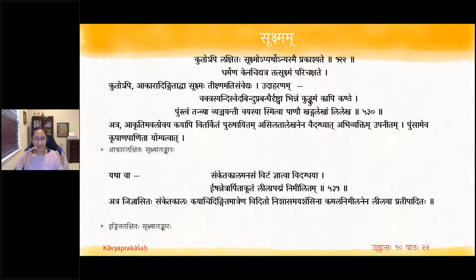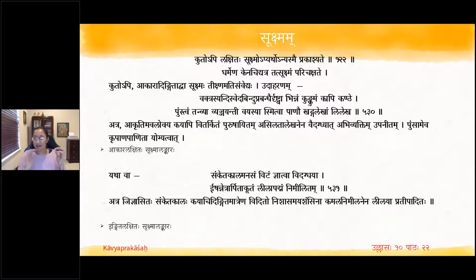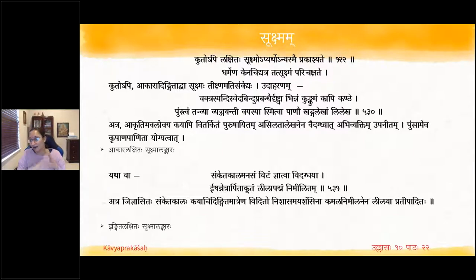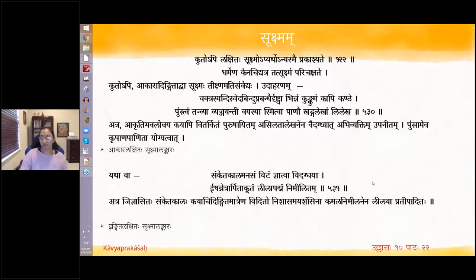The friend sees the nayika sweating with her makeup coming undone, and understands she engaged in union with her nayaka in an aggressive, purushayita manner. To convey this she draws a sword on her hand and shows it — a sword is usually carried only by a man. Purushayitam iti, asilata lekhanena vaidagdhyadu abhivyaktim upanitam — through the sword drawing, in an intelligent manner, it has been clearly shown that she behaved like a man. This is Akara Lakshitam Sukshmalankara.